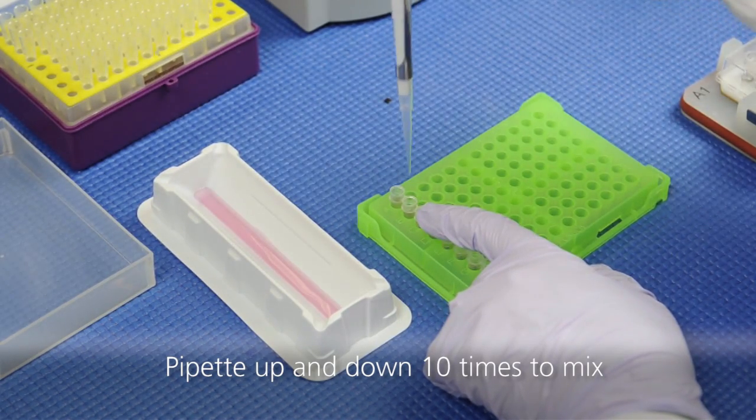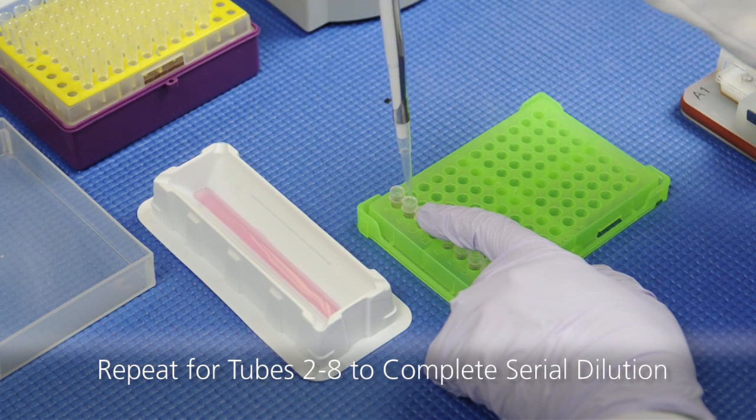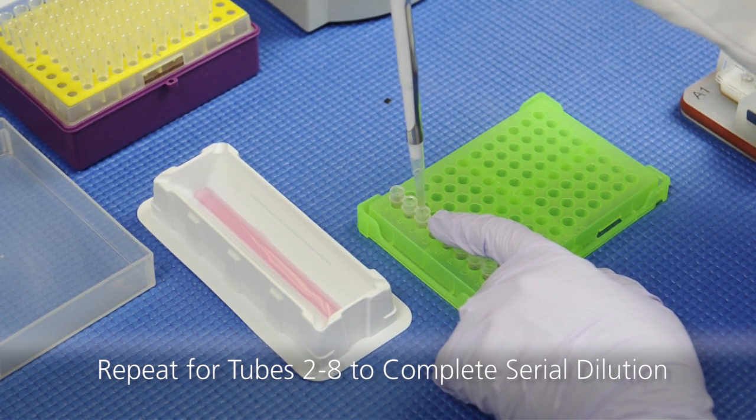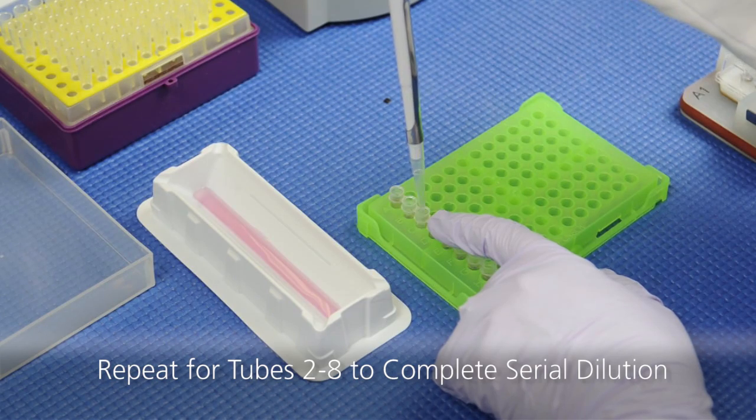Using a new pipet, transfer 50 microliters from tube 2 to tube 3 and repeat for the rest of the tubes.